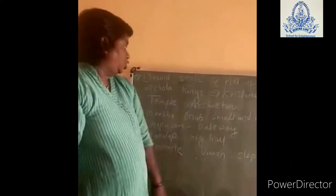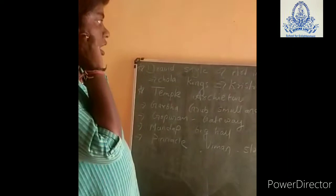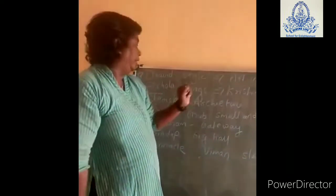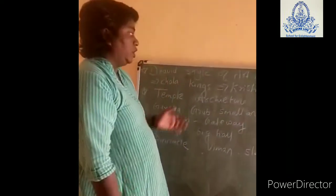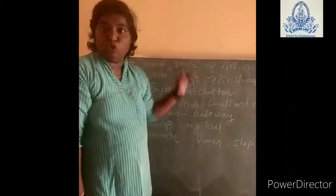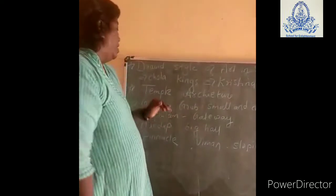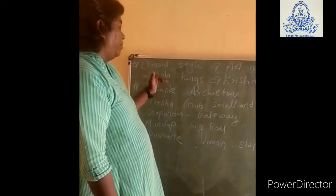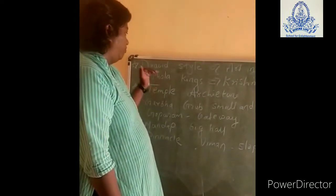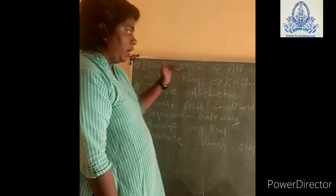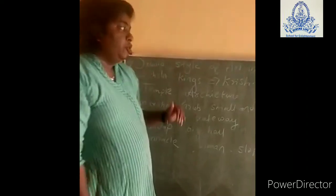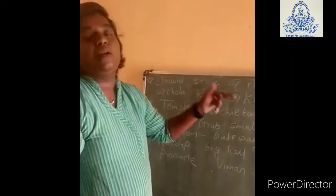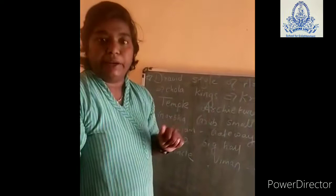The next topic is the Dravidian style of art. It was found in southern India. Here also you can find many stupas. These stupas were made by Chola kings. You can see the stupas near the Krishna and Godavari rivers.